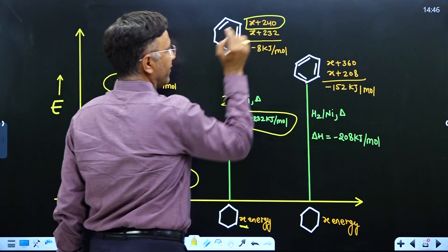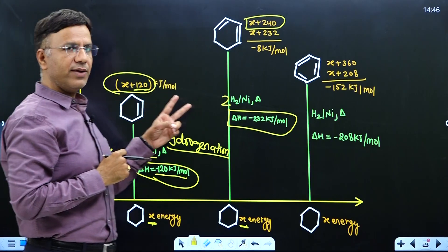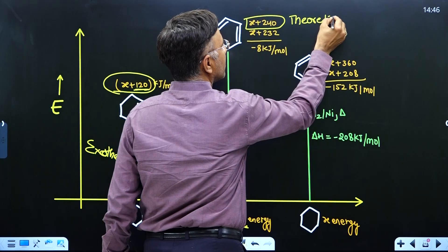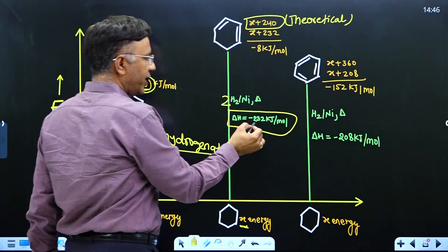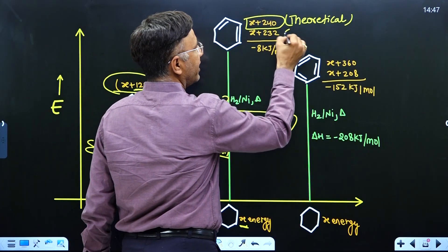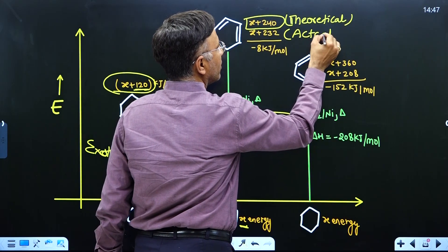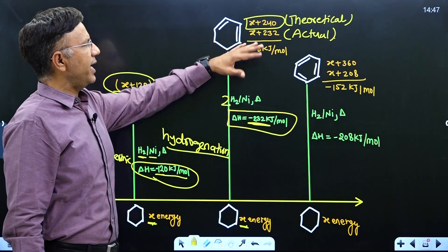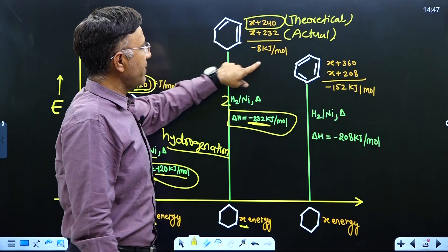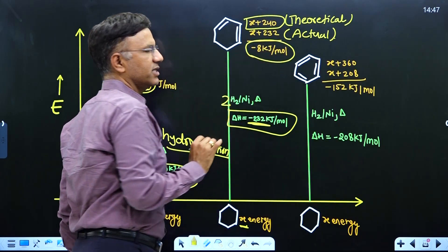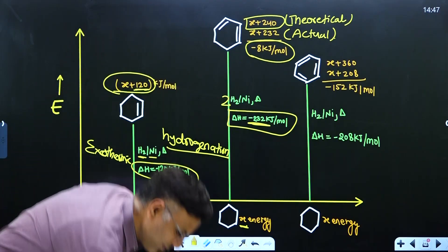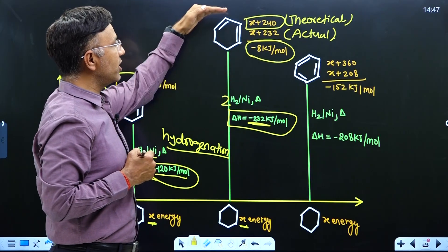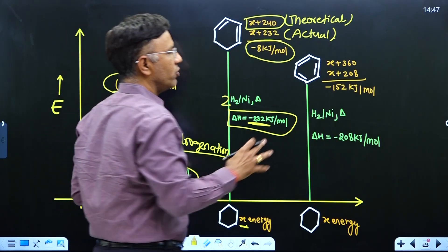For two pi bonds, the theoretical energy is x plus 240, since one pi bond hydrogenated releases 120 and two pi bonds release 240. The actual heat of hydrogenation is minus 232. The difference between theoretical and actual energy is the resonance energy: minus 8 kilojoule per mole. The cause of this is conjugation — because of conjugation, 8 kilojoule of resonance energy and stability is added.